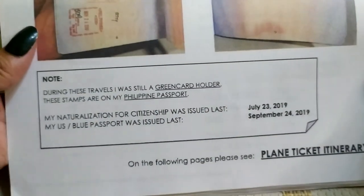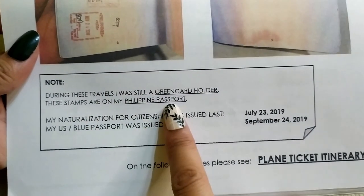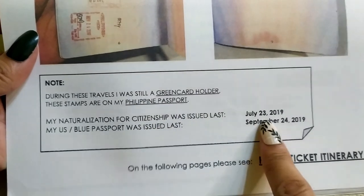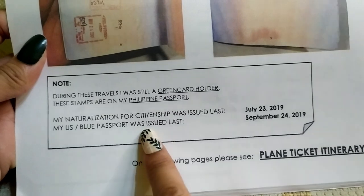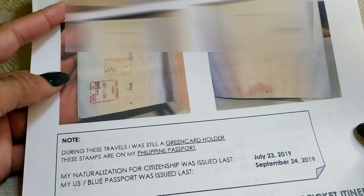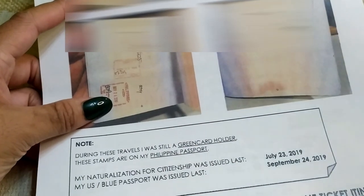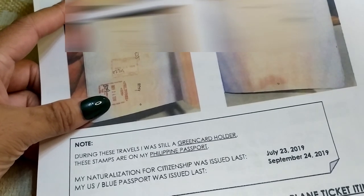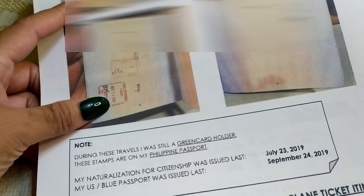At the end I put: 'During these travels, he was still a green card holder. These stamps are on my Philippine passport. His naturalization for citizenship was issued last July 23, 2019, and his U.S. blue passport was issued last September 24, 2019.' Just to make them know that he is a citizen, and to highlight that I gave birth when he was still a green card holder — so they won't ask for more evidence from our K-2.